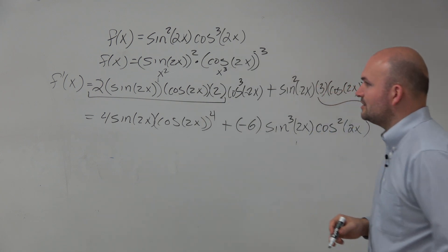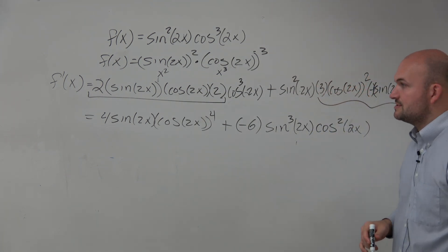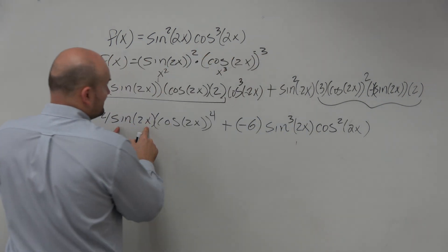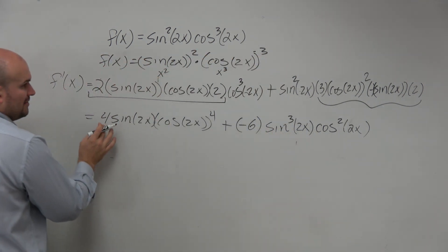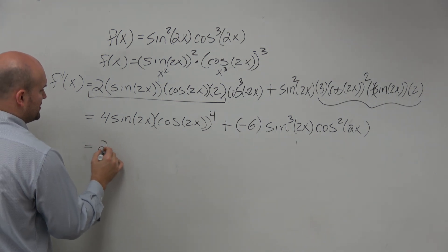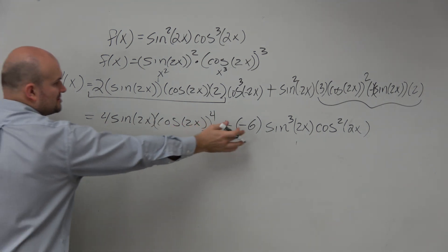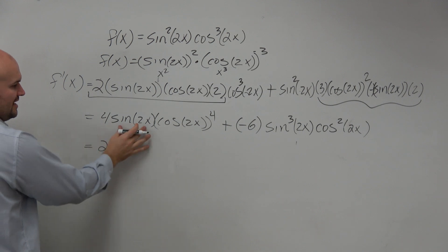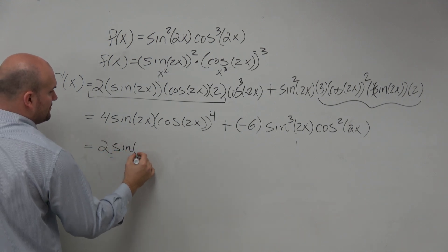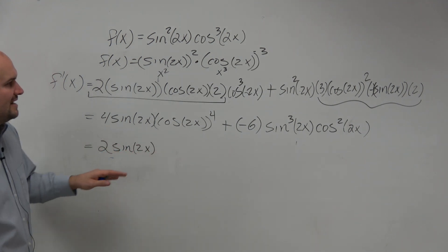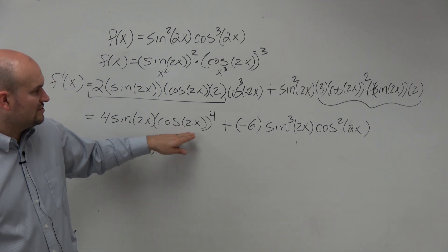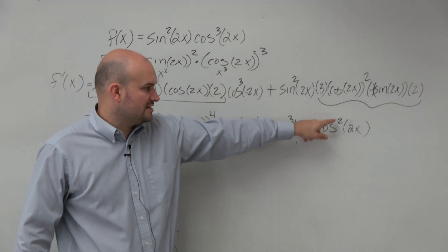So now we have all that information. Now let's factor out what we can factor out. So we notice we have a sine of 2x in both of them. And we also can share out a common 2. So I'm going to factor out a 2. That's the largest of my two numbers, 4 and negative 6. I can factor out a sine of 2x. And I can factor out a cosine. Looks like the highest power I can factor out is a cosine squared.